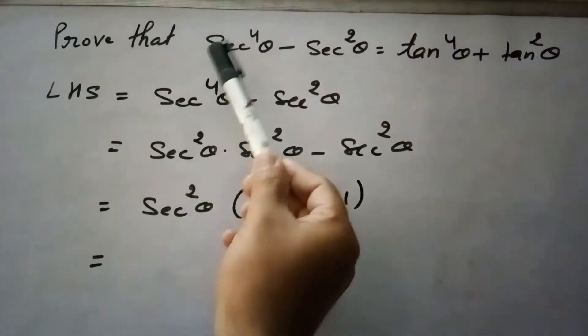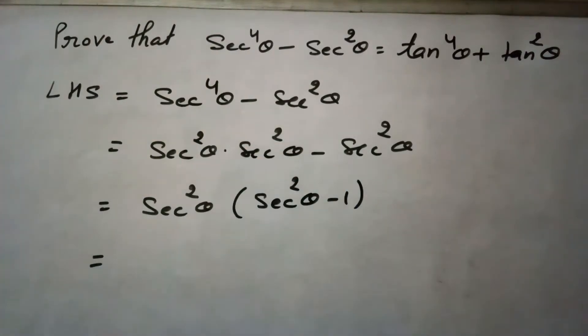So here the question is, prove that secant 4 theta minus secant square theta equals to tan 4 theta plus tan square theta.